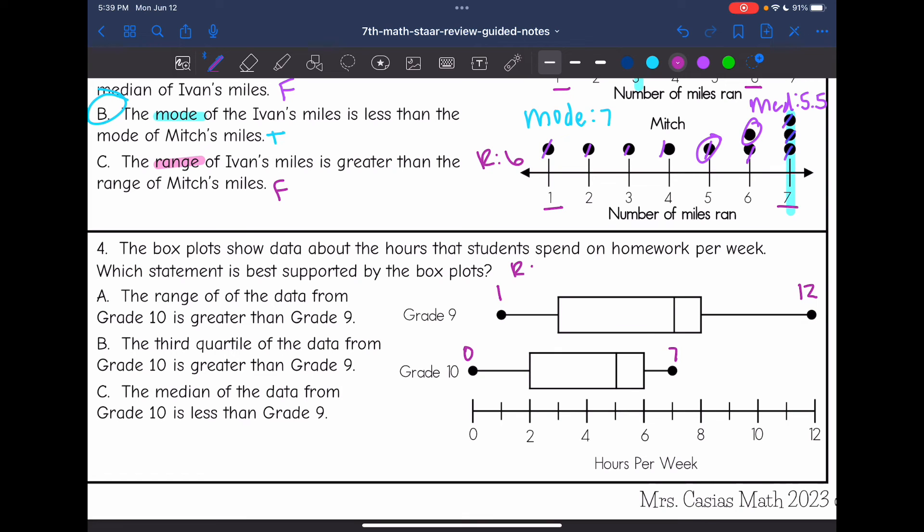So the range for grade nine would be 12 minus one, which is 11. And then the range for grade 10 would be seven minus zero, which is seven. So A says the range of the data from grade 10 is greater than grade nine. That is false. Grade nine had a larger range.